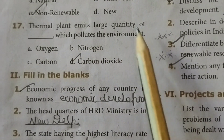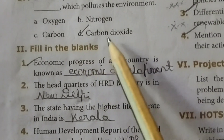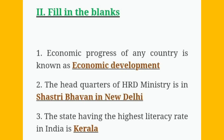Seventeenth one: thermal plants emit large quantities of dash which pollutes the environment — Option D, carbon dioxide. Roman numeral II, Fill in the Blanks. First one: economic progress of any country is known as — economic development. Second one: the headquarters of HRD Ministry is in — Shastri Bhavan, New Delhi. Third one: the state having the highest literacy rate in India is — Kerala.